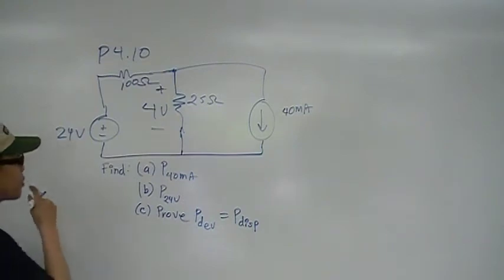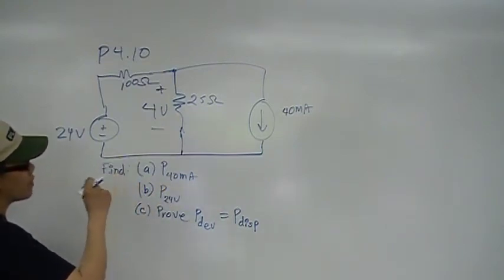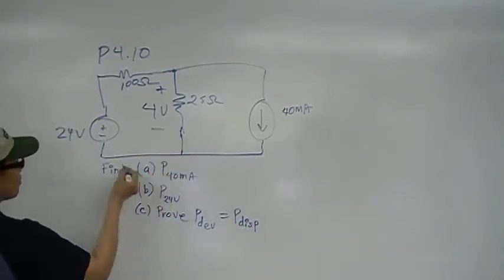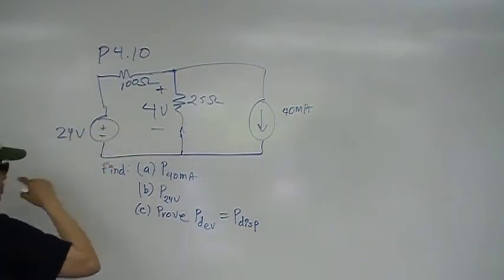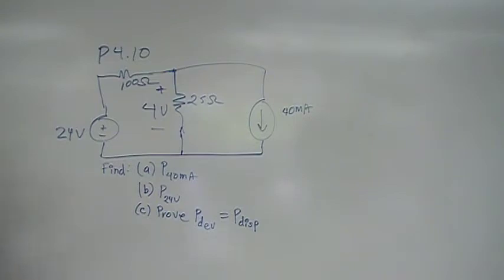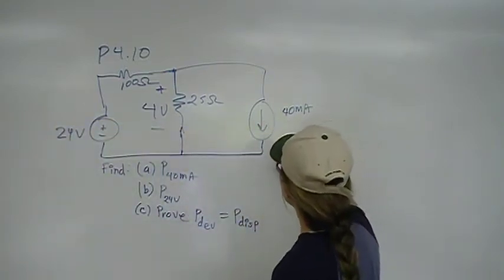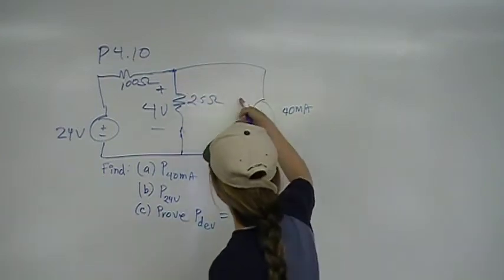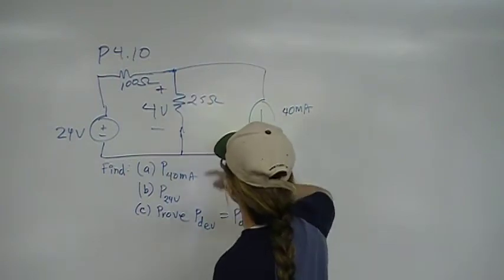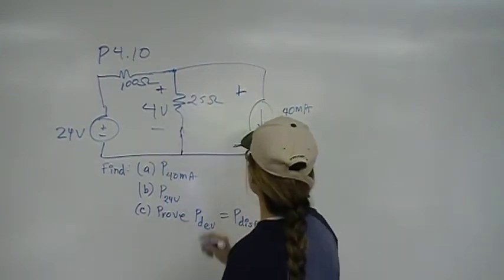So in this problem we're finding the power from this current source, or from that branch current. We want to find this power, and we also want to prove that power developed is equal to power dissipated. To find the current here, we have to recognize that these two are connected in parallel. This branch current is in parallel with this 4 volts. Therefore, it has the same polarity.